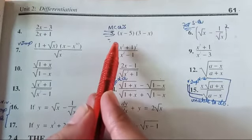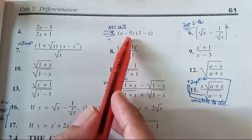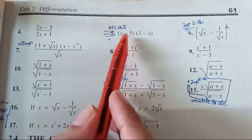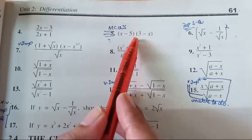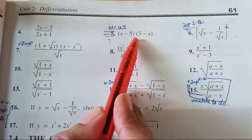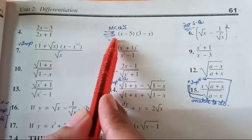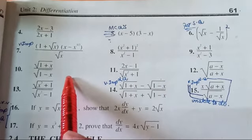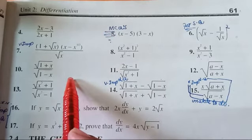Question number 5 is very easy and it is important with respect to MCQs. I will give you a hint for the solution and you will solve it yourself. First of all, multiply x with (3 minus x), and after that 5 with (3 minus x), then do simple calculation and use the power rule: x^(n-1) into the derivative of x with respect to itself. Today we will complete questions 5 to 10, a total of 5 questions.